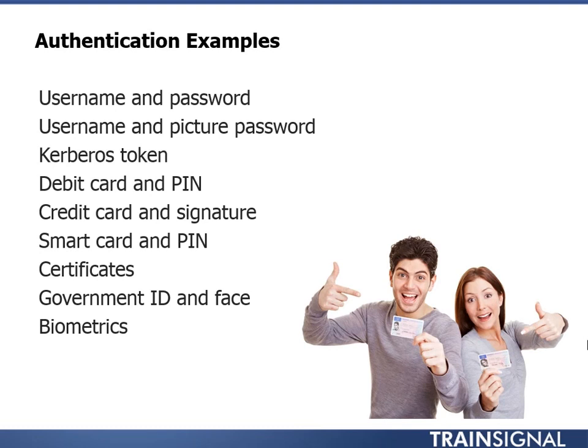A more modern example is a username and a picture password. Picture passwords are a second form of authentication used by some mobile devices, tablets, and most notably Windows 8 touchscreen interfaces. Another form of authentication is a Kerberos token — we'll talk about Kerberos in detail in a later lesson. It's a way that computers on a network can authenticate you and allow you to prove yourself to every file server and database server you come across.